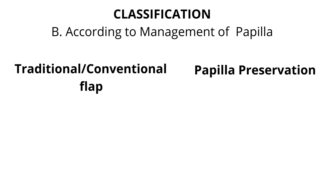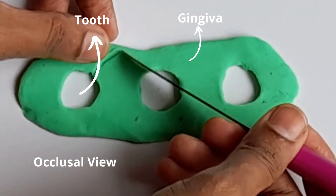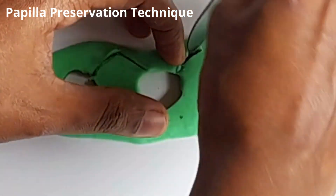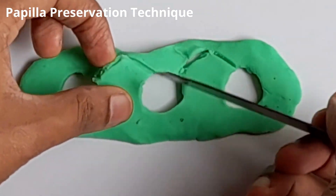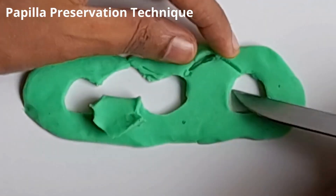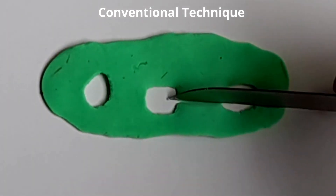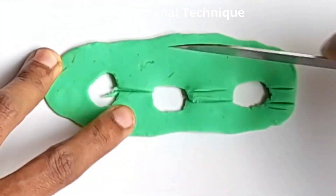Flaps are further classified according to the management of the papilla — either the conventional or traditional flap, or the papilla preservation flap. Looking at the tooth and gingiva from the occlusal aspect, the three white holes are three different teeth and the green part is the gingiva. In papilla preservation, a semi-lunar incision is made towards one side, either on the buccal or lingual flap. In the conventional technique, the interdental papilla is split right through the center — there is no preservation.